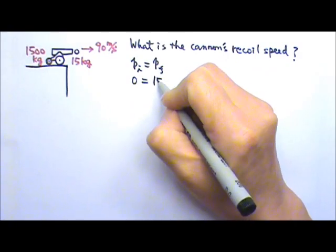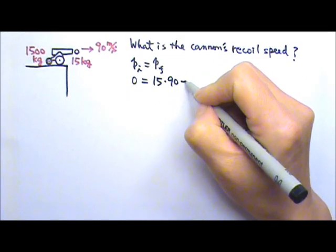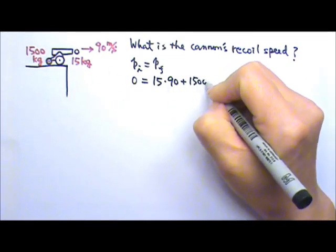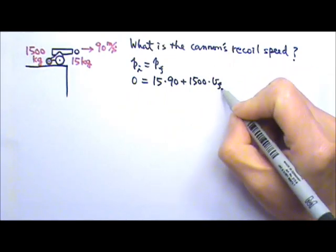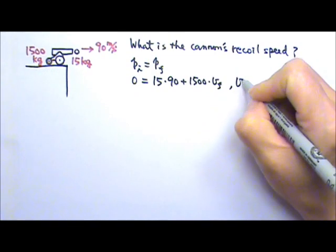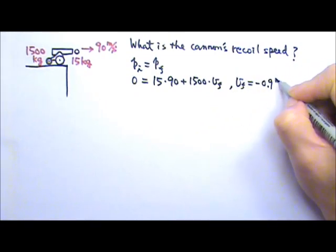Afterwards, the cannonball has momentum m times v. The cannon also has momentum, mass m times v. The final velocity we don't know, we are looking for that final velocity. And then we can find the final velocity to be negative 0.9 meters per second.